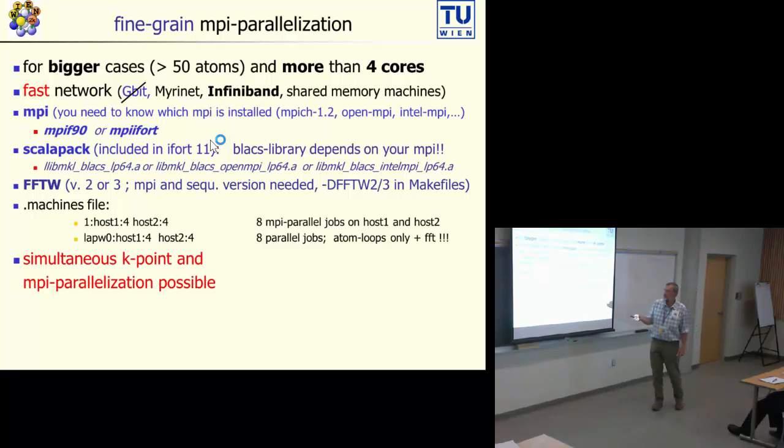Also, lapw0 can be parallelized in that way with this syntax, but usually the time spent here is much less than what you spend in lapw1. And of course, you can simultaneously do k-point and MPI parallelization simply by putting a second line in this file, maybe with hosts 3 and 4, if you have four of those hosts.